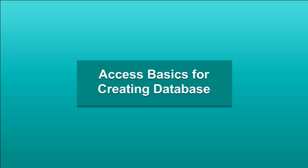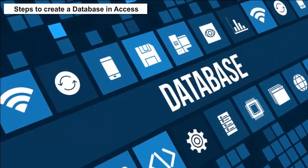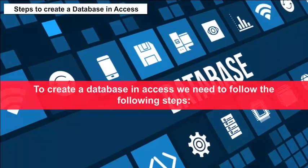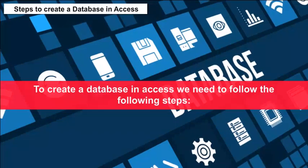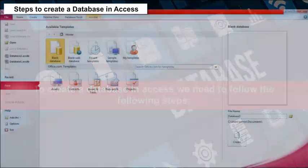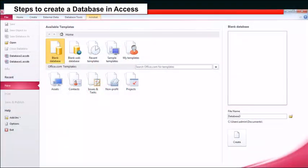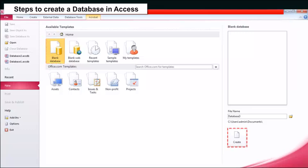Access Basics for Creating a Database: To create a database in Access, we need to follow these steps: Open Microsoft Access Program, click on Blank Database and choose the location and name of the file, then click on the Create button or click on the New button in the file menu.